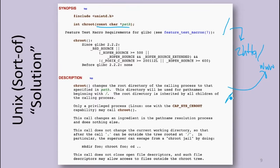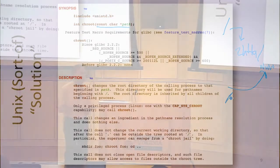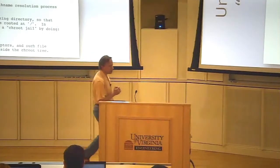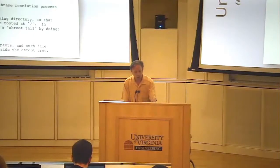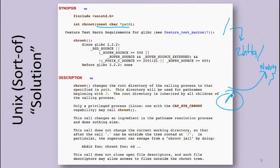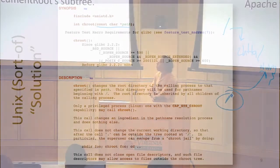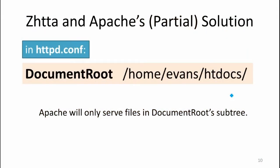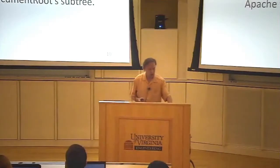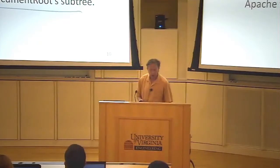There's no way to go above the root of the file system once you've done a chroot — you can't see any files outside that subtree. This gives you a fairly high amount of confidence, as long as you don't put anything sensitive in that subtree. Apache does something like this. As part of its configuration, you can set the directory it will look for web pages, and it's designed to only serve files within that subtree.